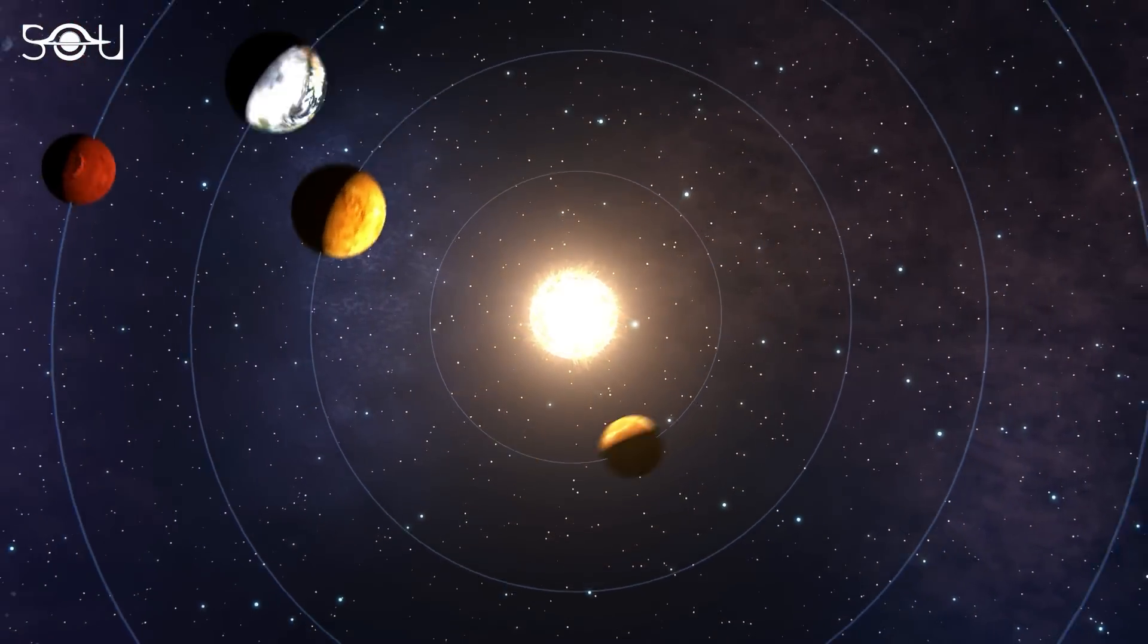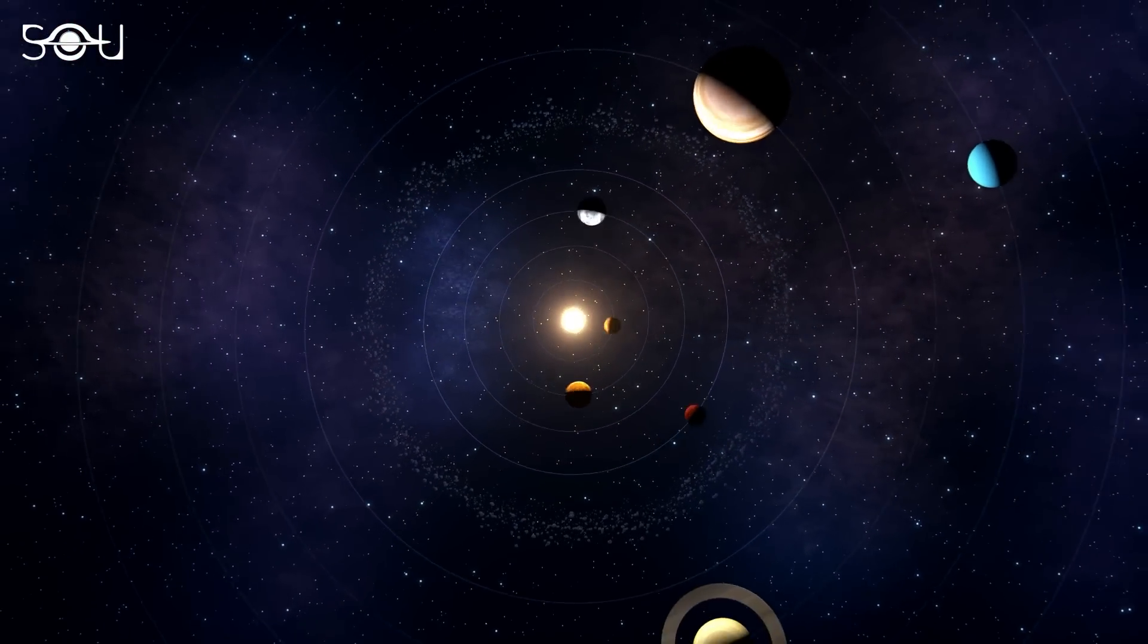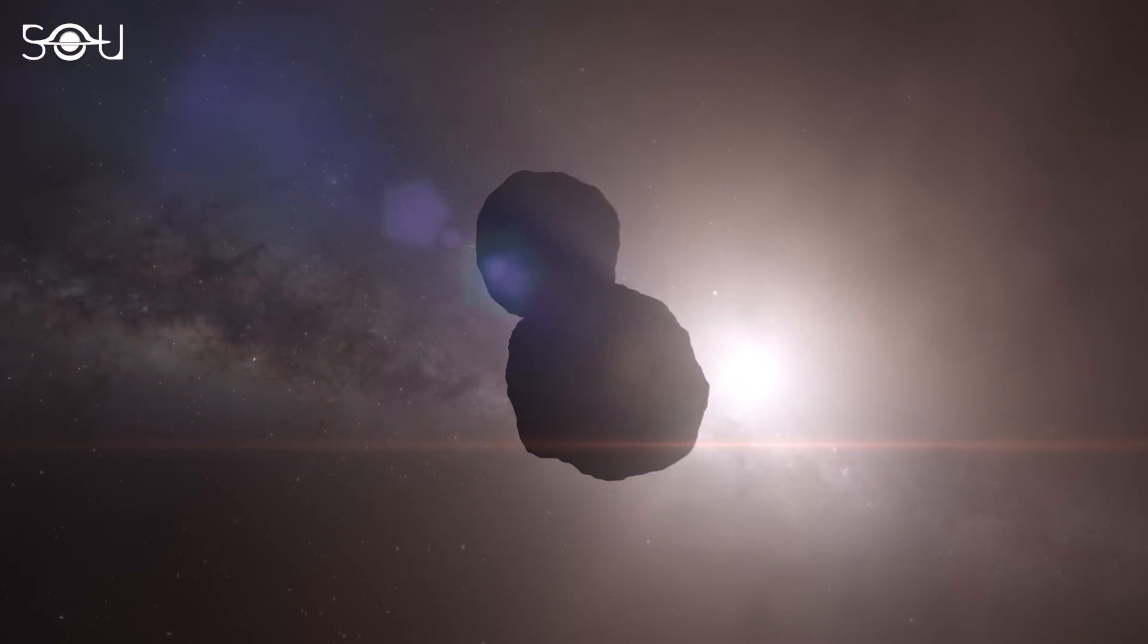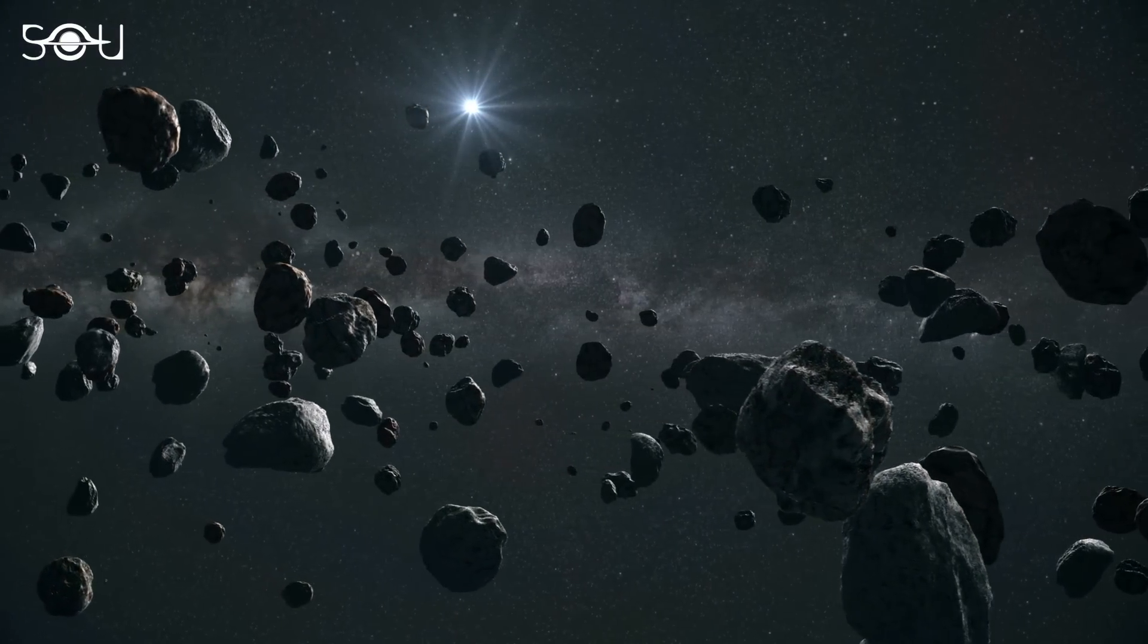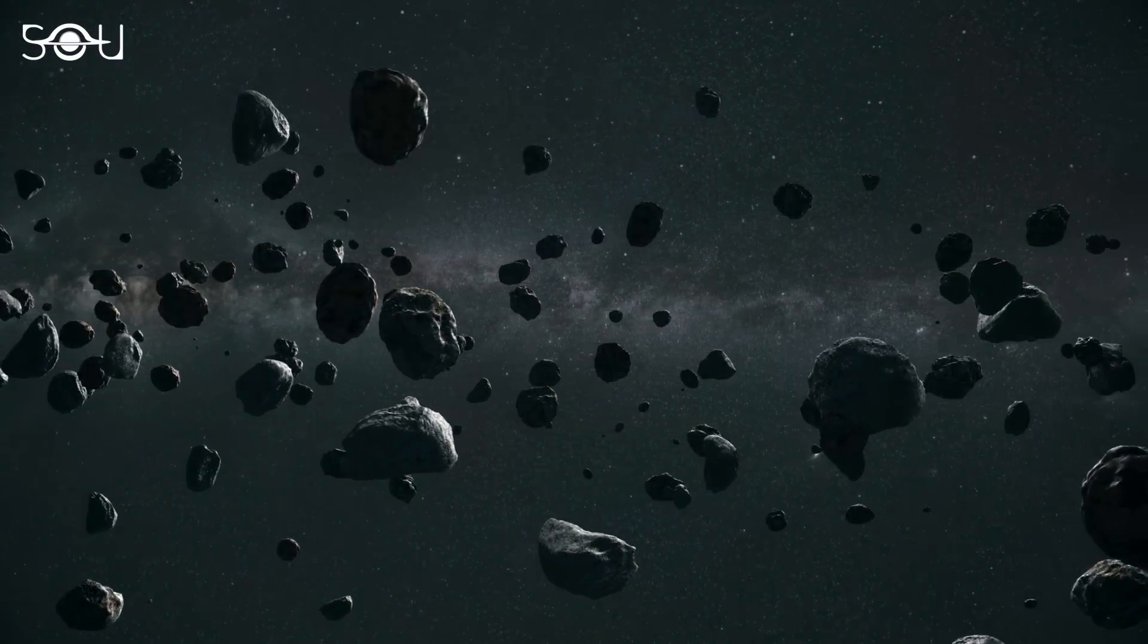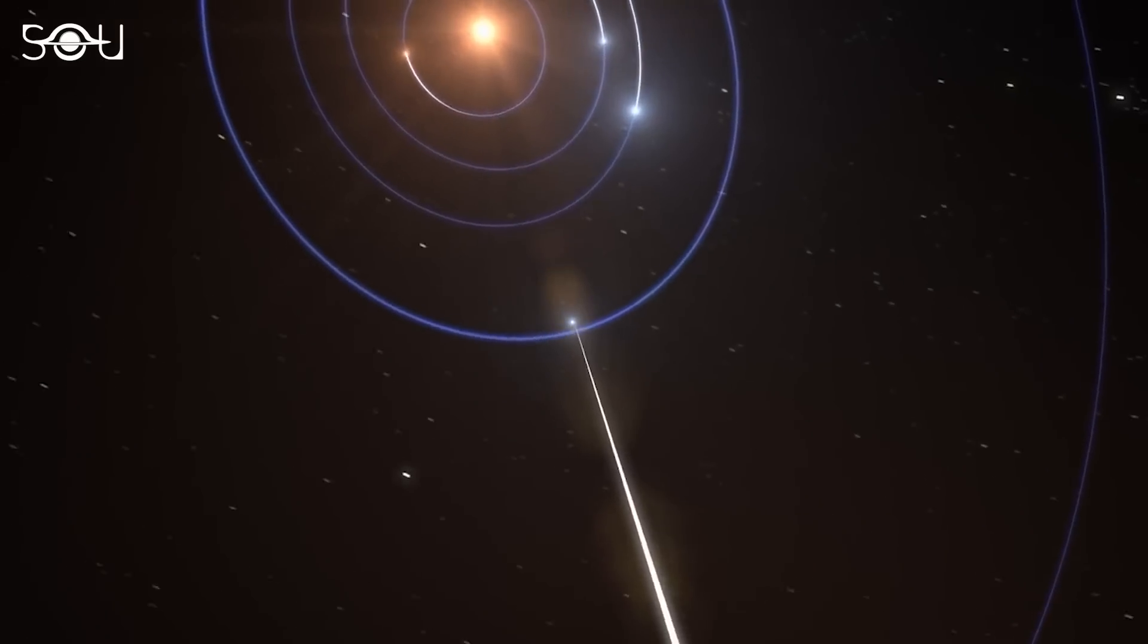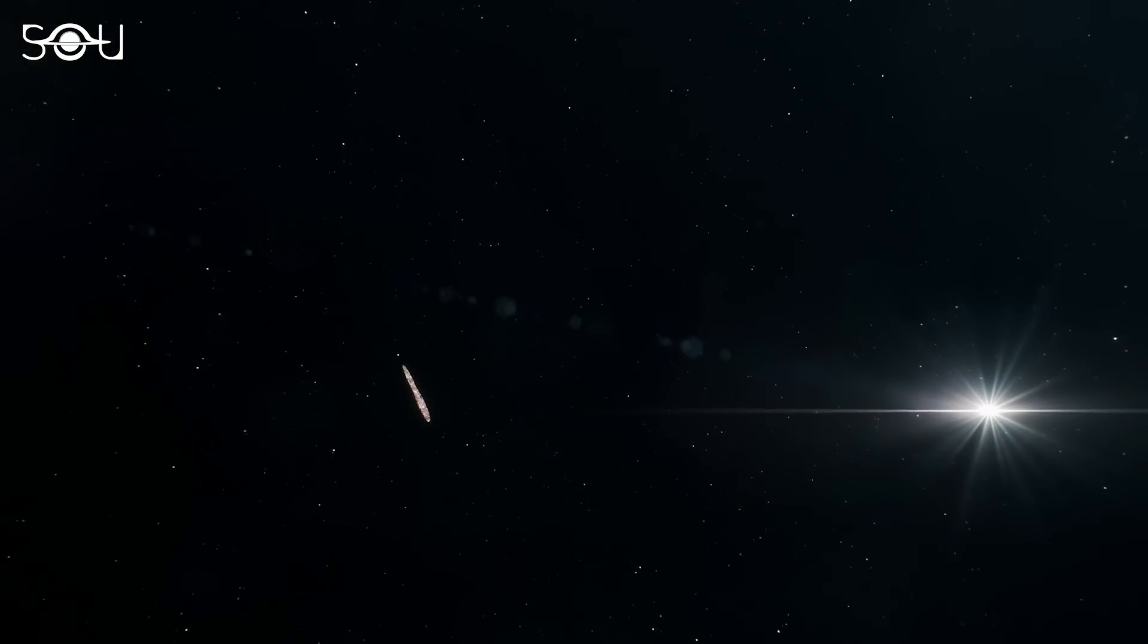Besides studying foreign worlds, it will undertake extensive studies about our solar system. For example, the telescope will be used to study 59 trans-Neptunian objects, which are the icy bodies lying beyond the orbit of Neptune. In addition, it is also hoping to observe an interstellar object passing through our solar system, just like Oumuamua in 2017 or comet Borisov in 2019.